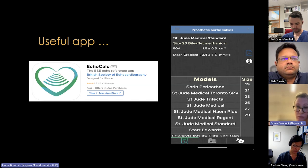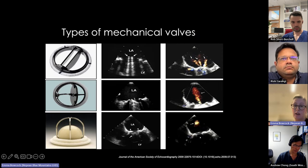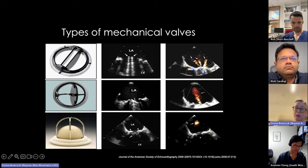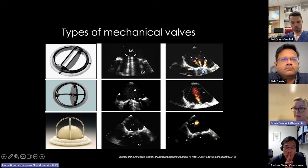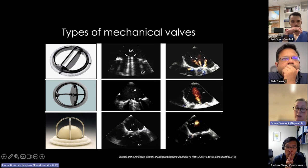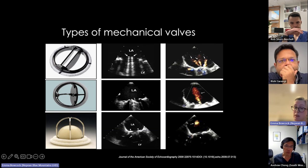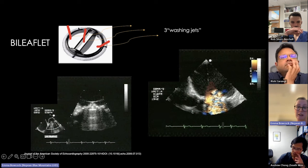On echo, the bileaflet valve shows ring-down comet tails coming off the two occluders, hinge points, and a rigid sewing ring. The tilting disc shows a single tilting disc. With bileaflet valves you get three physiological jets, whereas the tilting disc gives a central jet. The Starr-Edwards ball-cage valve shows minimal closing volume — sometimes just a small puff of turbulence in the left atrium.